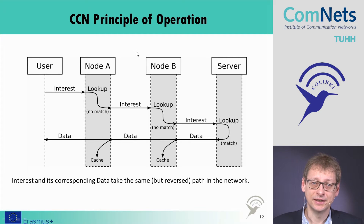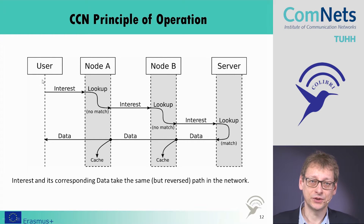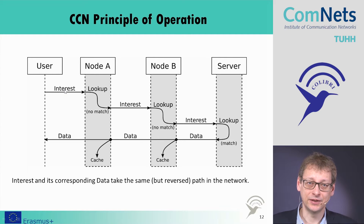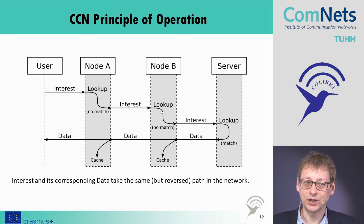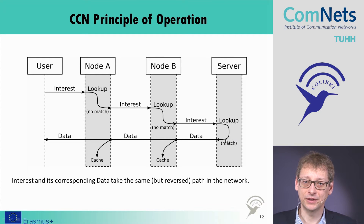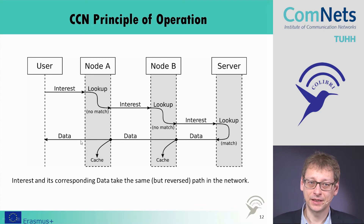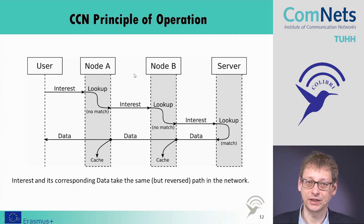To understand how this works in practice: we have a user, different routers in the network, and a server. A router sends out an interest — for example, interest in BBC News. The node checks its content cache; if the content is there, it returns it directly. If not, it forwards the interest to the next node or router. This continues until it reaches the server, which returns the data. Each node on the return path caches the content according to its strategy. If another user later requests the same content, they get it directly from the cache.